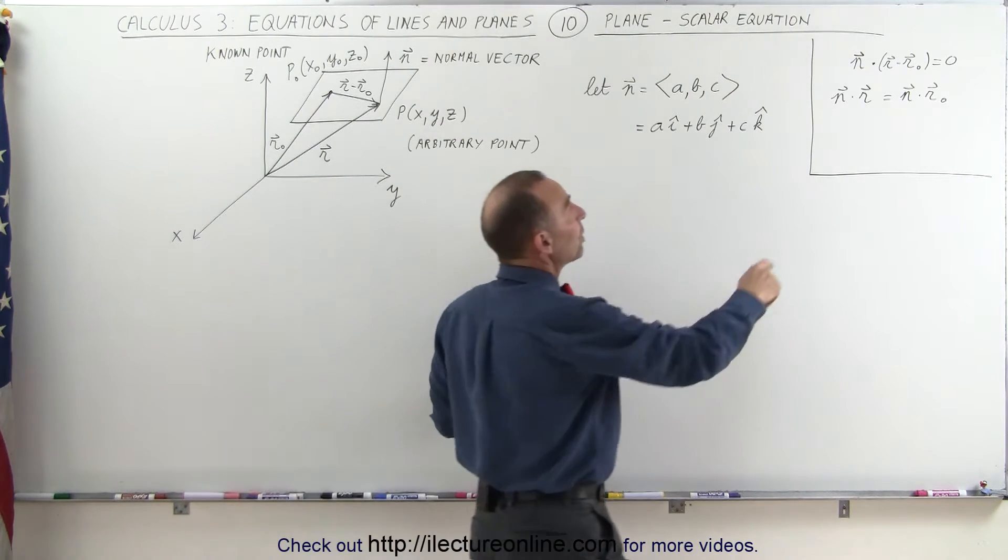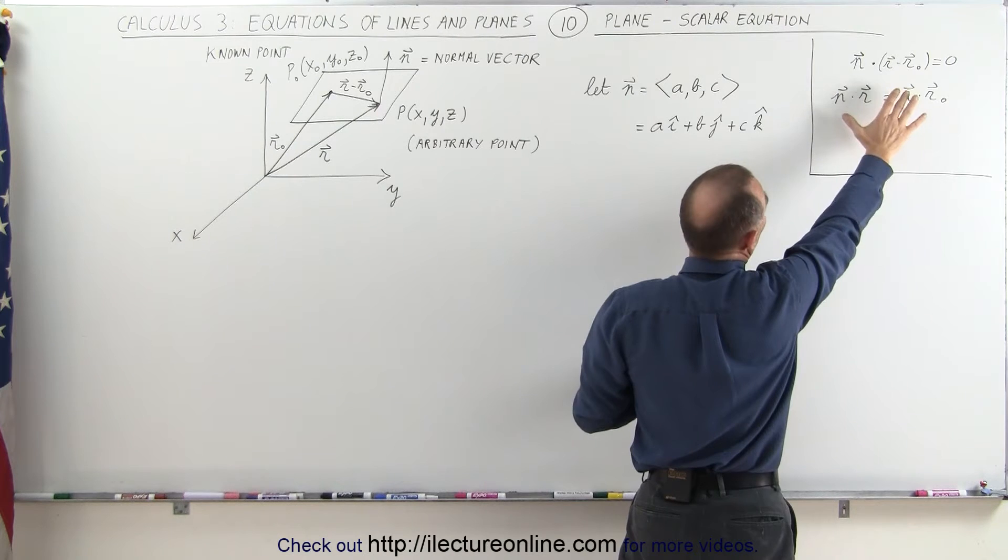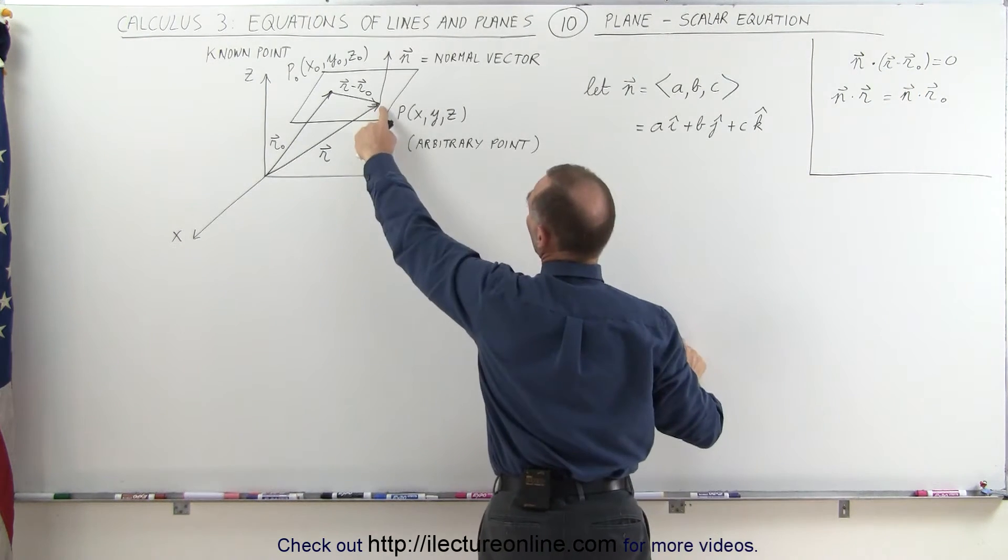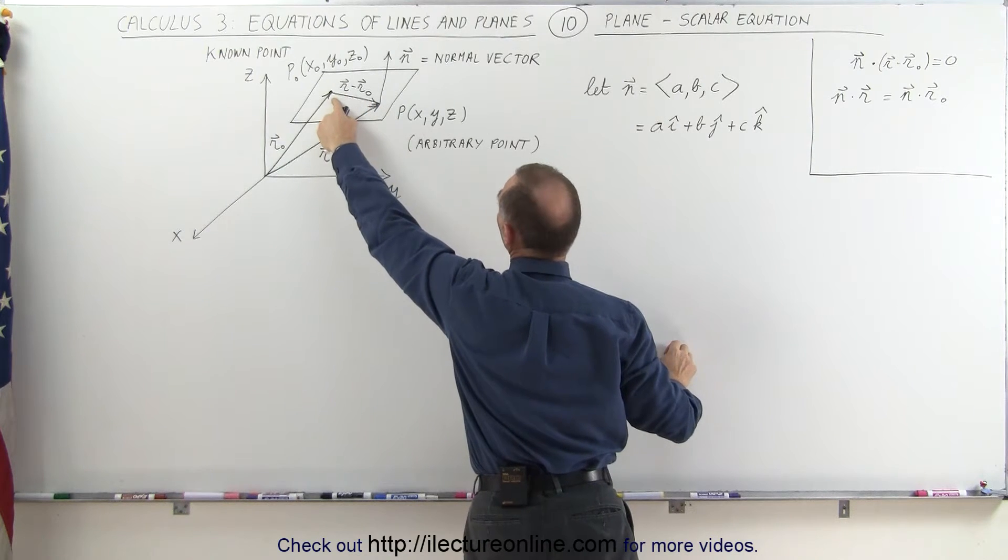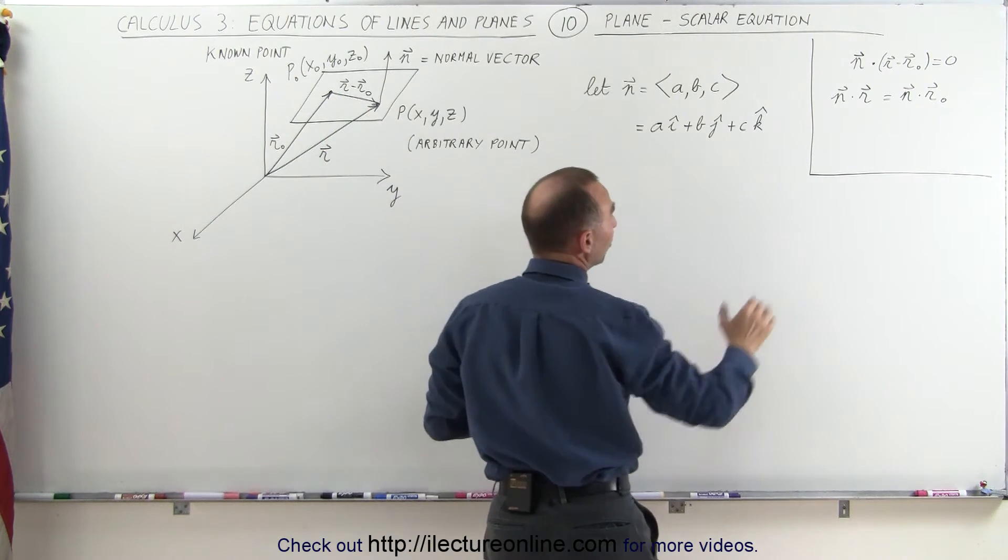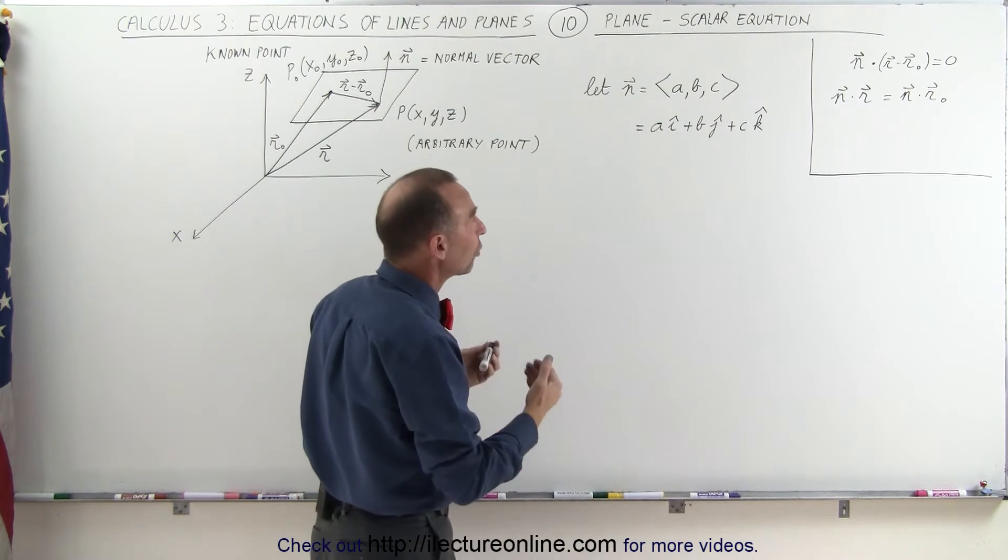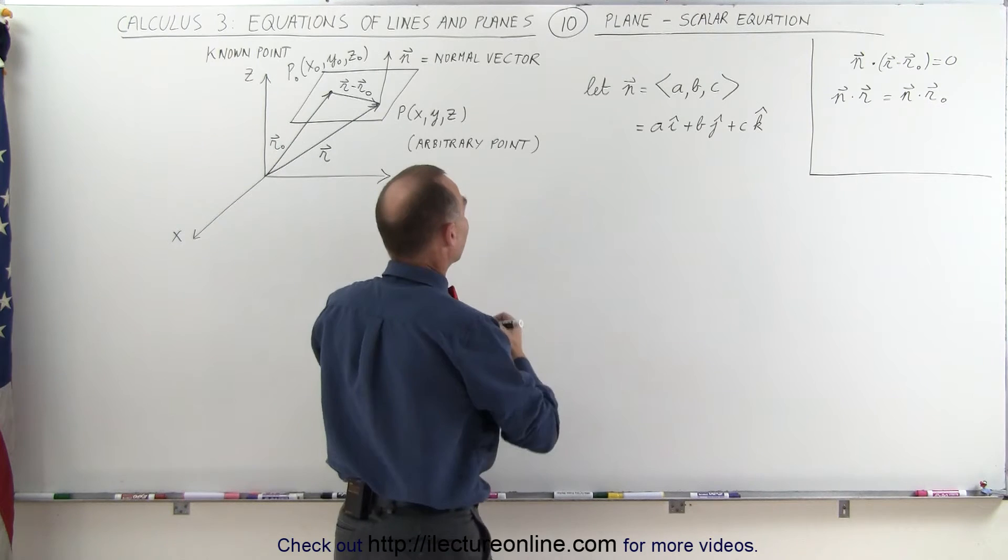From the last video, we realized that the vector equation is the normal vector dotted with the difference between the position vector to the unknown point and the position vector to the known point, which can be written in either one of those two forms. Using that, let's go ahead and find the equivalent for the r vector.